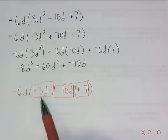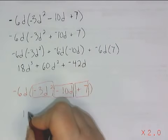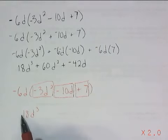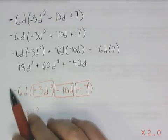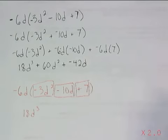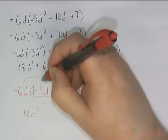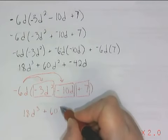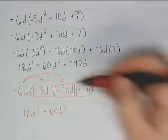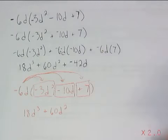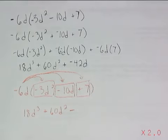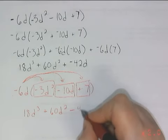When I multiply this negative 6d times this negative 3d, I should know I get 18d to the third and it's positive because a negative times a negative is a positive. I know that negative 6d times negative 10d should give me a positive as well, so plus 60d squared. And as I multiply my last pair, a negative times a positive gives me a negative, so I write down minus 42d.